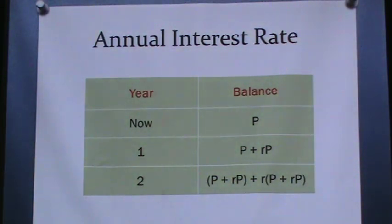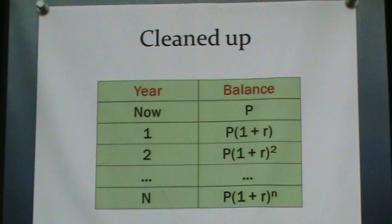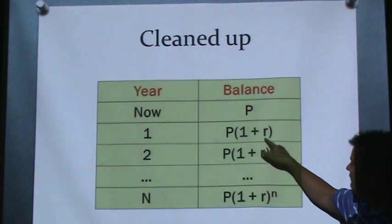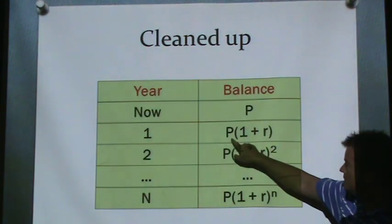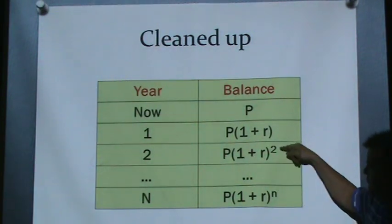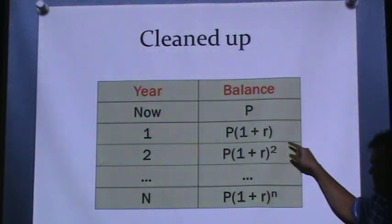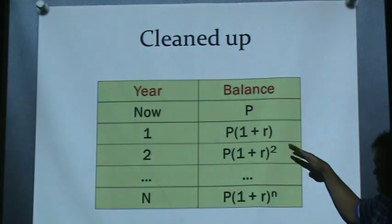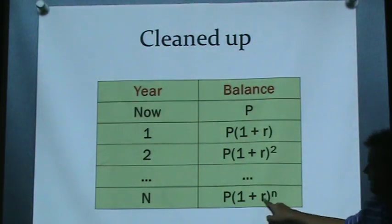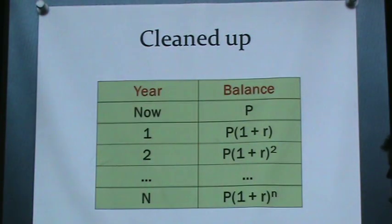If we wanted to clean up this formula, because year after year it gets messy, here's your principal. One year from now would be the principal times 1 plus the rate — like 1.05 times the principal. Then 1.05 starts compounding year after year: 1.05 squared is 1.1025. For any given year, we raise 1 plus the rate to the power of n for the number of years.